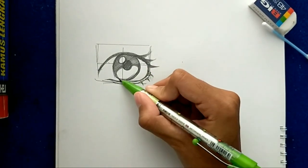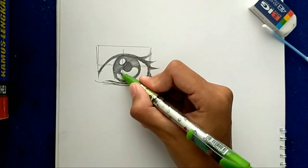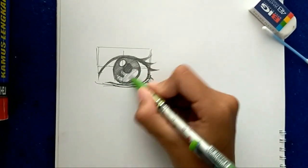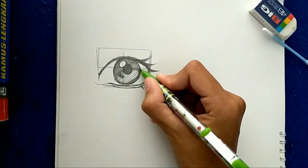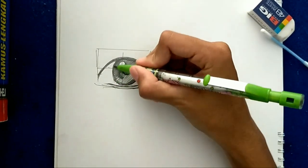And for the other half, you can color it with your pencil thinly like this. It will make your eye look more realistic.